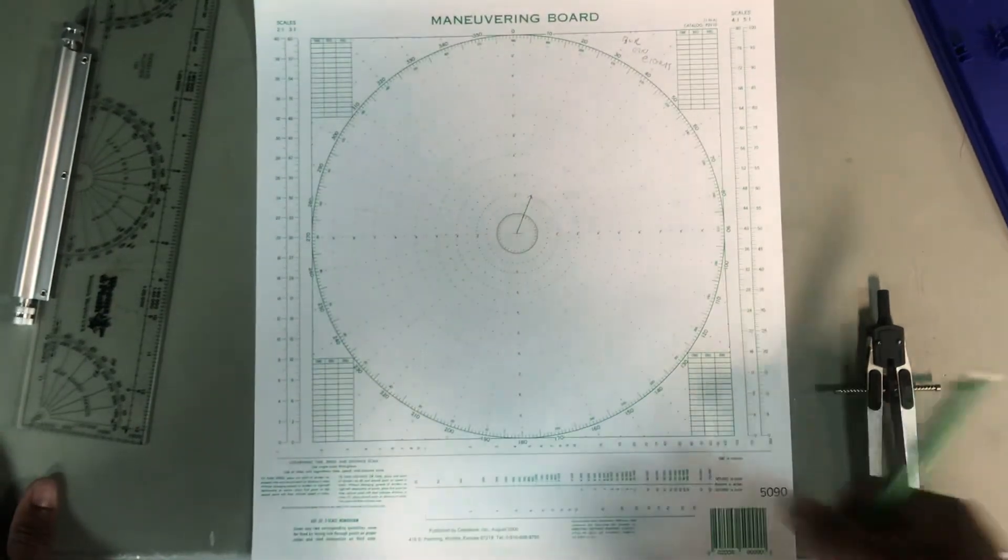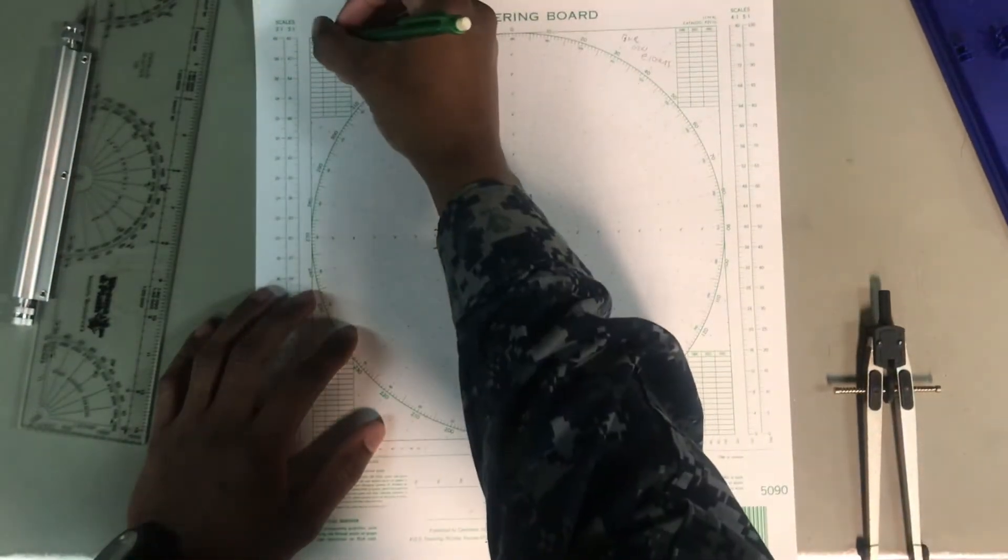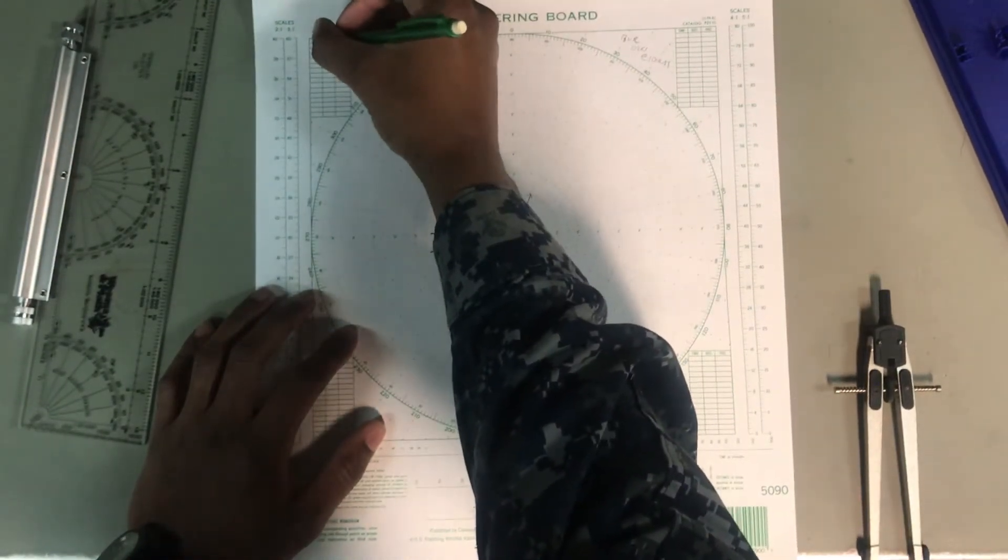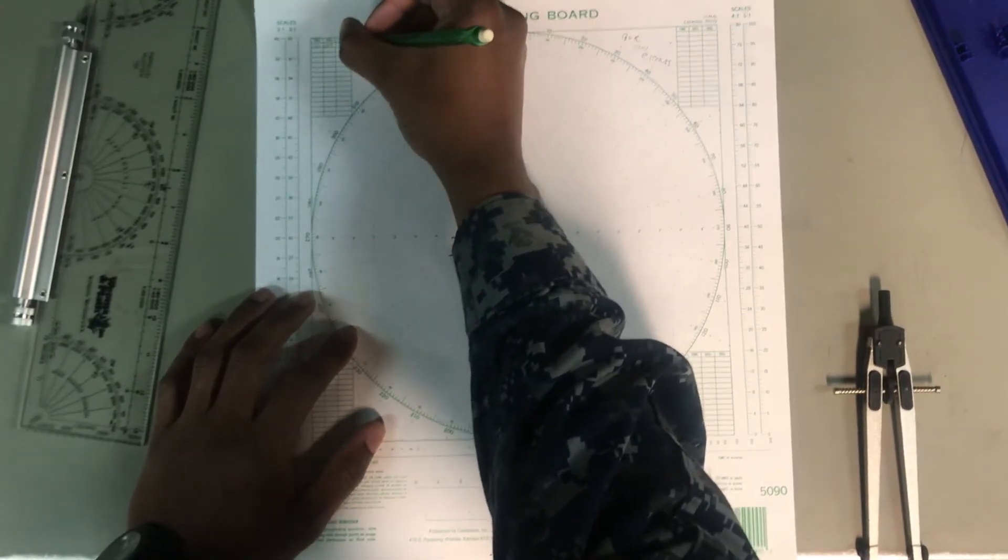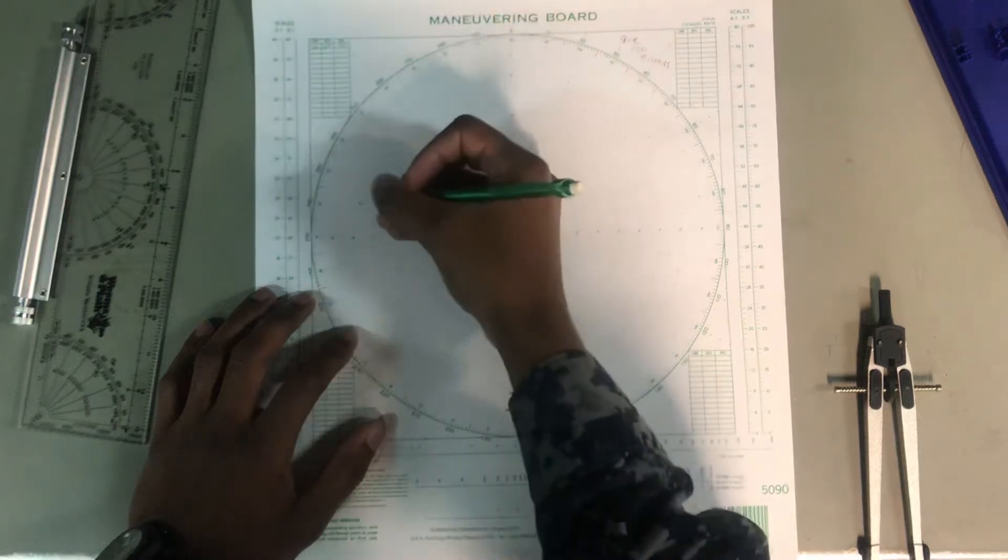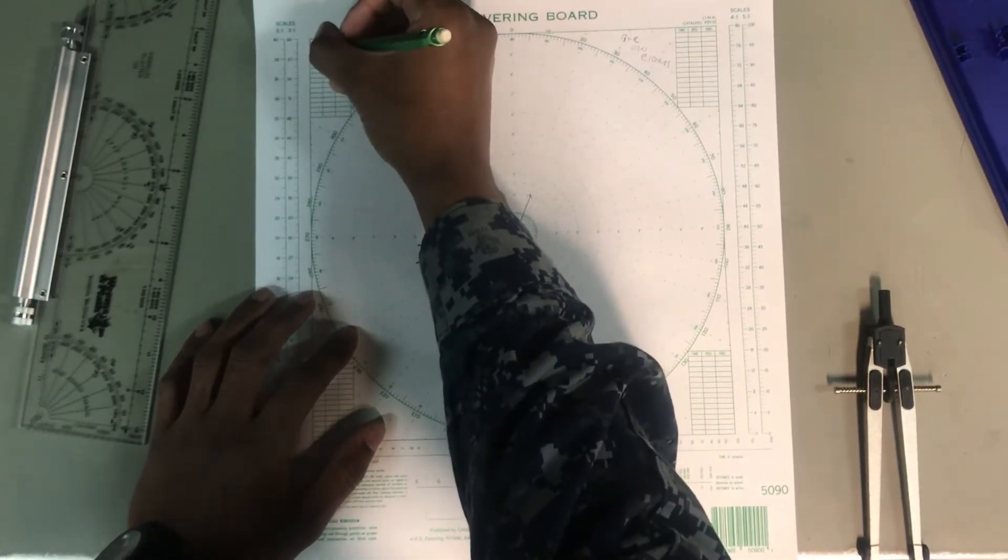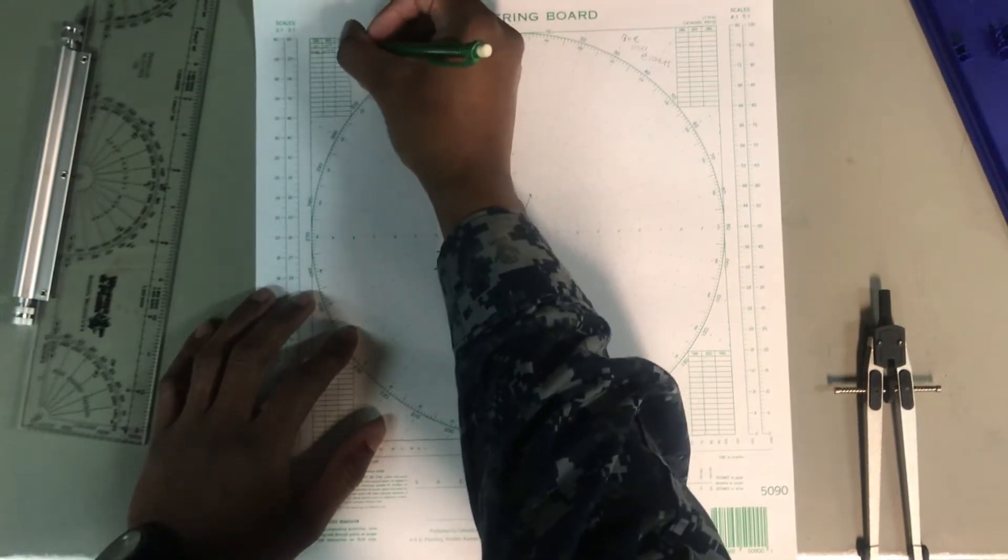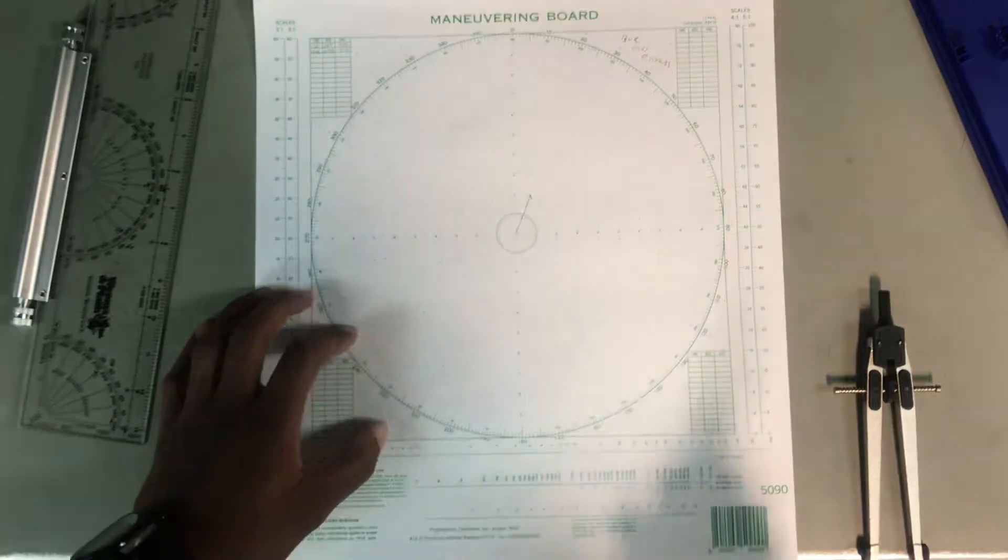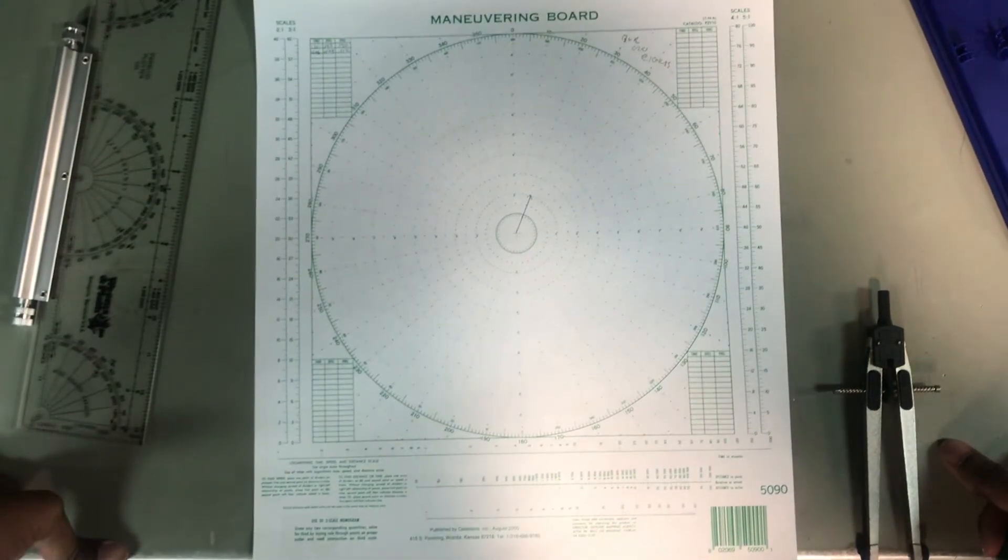Now, you can just do an arrow if you don't like a whole bunch of lines. That's usually why I do it. Or you can actually just draw a line out so you can see exactly what your ship is doing.